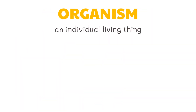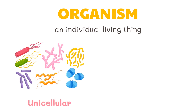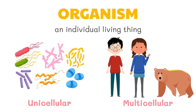An organism is an individual living thing that is made up of one or more organ systems. An organism is a recognizable, self-contained individual. Organisms can be unicellular organisms such as bacteria or amoebae, or multicellular organisms comprised of organs and organ systems. A human being is an example of a multicellular organism.